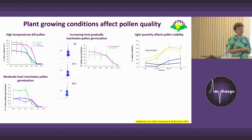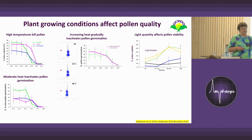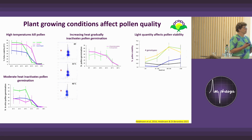Another factor I found recently is that light quantity affects pollen or microspore quality. These are four different genotypes and each reacts differently to the amount of light they experience in the season. One seems to be completely ignorant of light — there may be a genetic problem — but others increase their pollen viability depending on the light intensity they get. This is important to know for double haploid production and also if you want to develop heat resistance, since heat often comes with high light intensity.